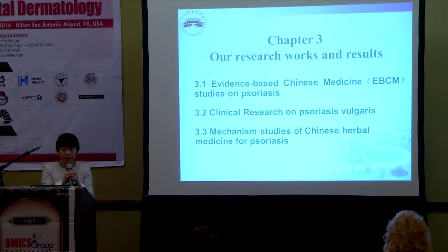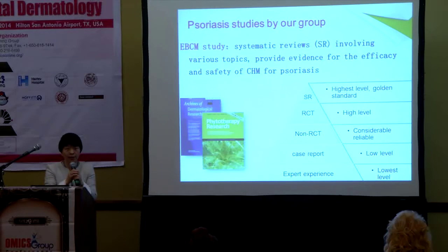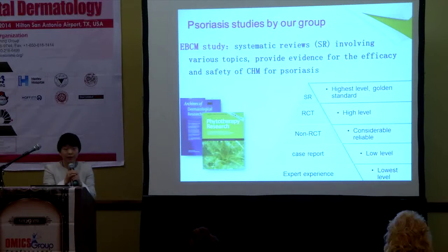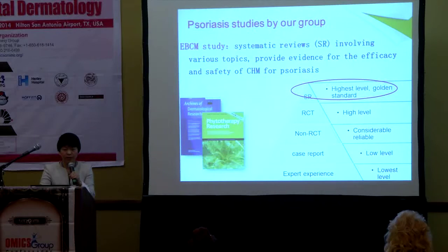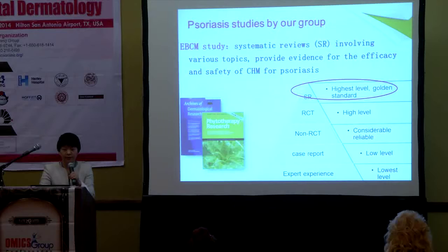In Chapter 3, I will introduce some of our research work and results. The first area we conducted is evidence-based study. We have conducted several systematic reviews involving various topics to provide evidence for the efficacy and safety of Chinese herbal medicine for psoriasis. The systematic review is the highest level and golden standard of evidence. The first review is about oral herbal medicine for psoriasis.